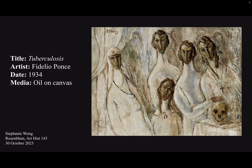Ponce was born in 1895 and studied at the National Academy of San Alejandro in Cuba. Instead of traveling abroad to study in Europe as many of his modernist contemporaries did, Ponce isolated himself for five years in Cuba. After this isolation, his work became much more violent, melancholy, heavy, and monochrome.